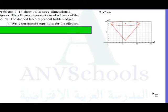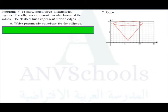All we need to do here is write parametric equations for the ellipses. For number seven we have a cone here and we have to find the parametric equation for the ellipse. So how do you find it?